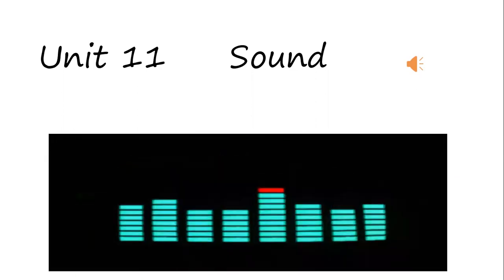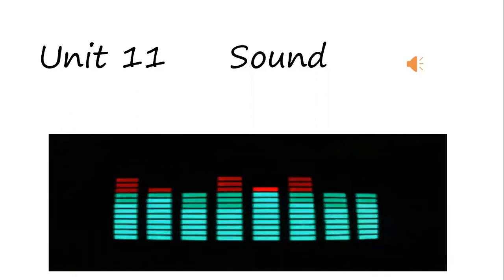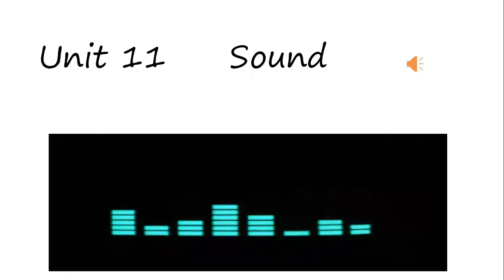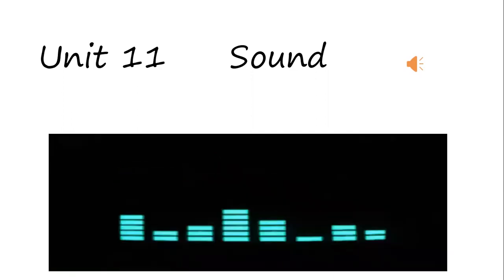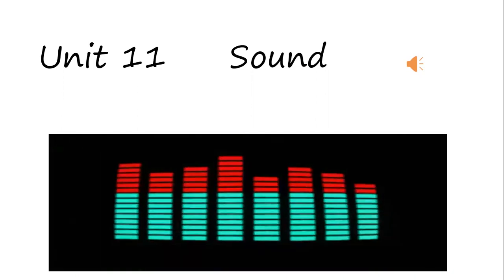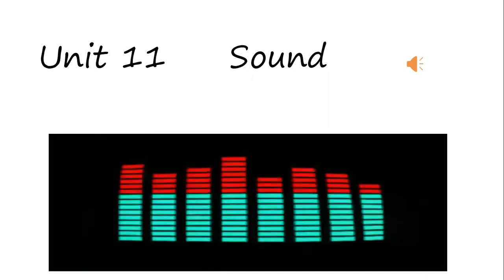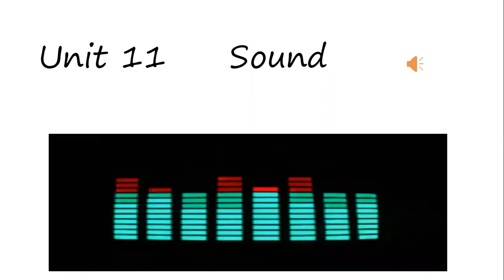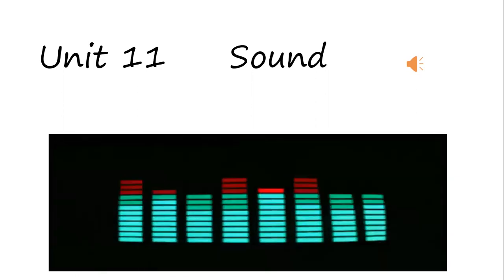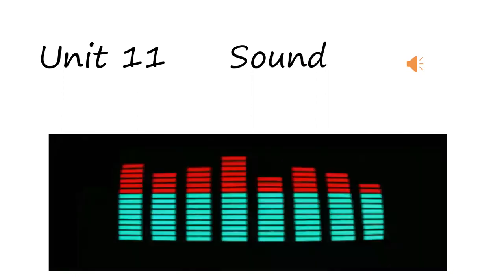We know that vibration of objects in any medium produce waves. For example, a vibrator of a ripple tank produces water waves. The medium in this case is liquid, but it can also be a gas or solid. Waves produced depend on the frequency of the vibrator. If the frequency of the vibrator is audible, it can produce the perception of hearing. If the frequency is not audible, it will not produce the perception of hearing.